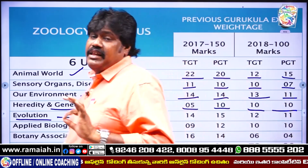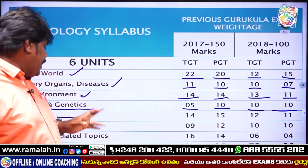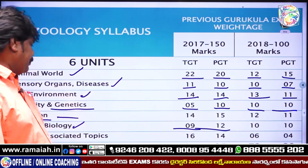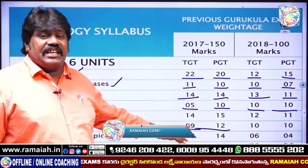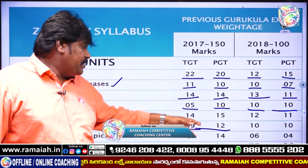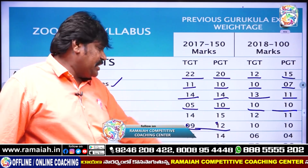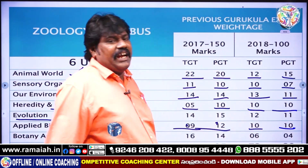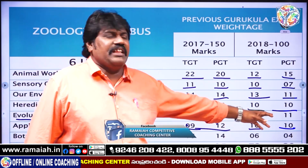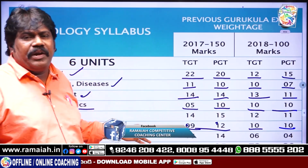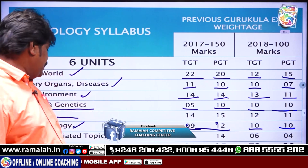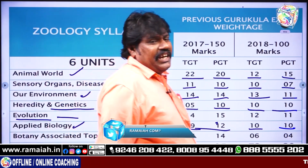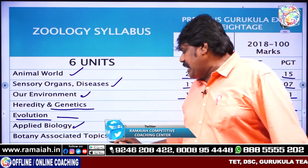These are the main topics in Applied Biology. Applied Biology also plays an important role after the Environment unit. In Applied Biology, 9 questions were asked in TGT and 12 questions in PGT in 2017. In 2018, 10 questions were asked in both TGT and PGT. It is another important and easy topic of Biology.